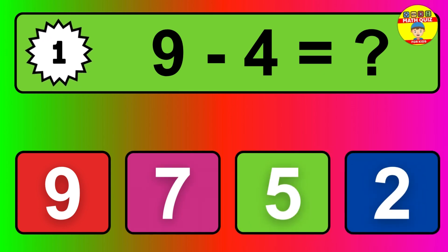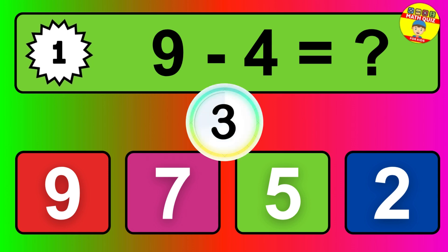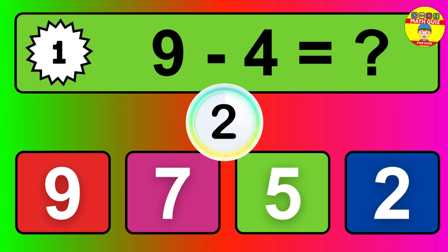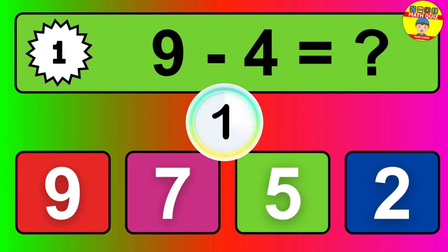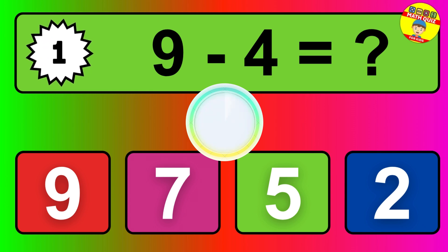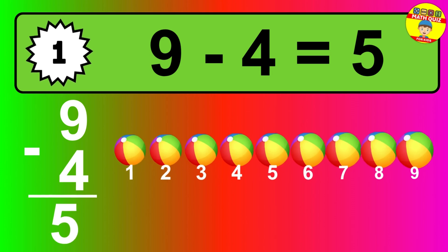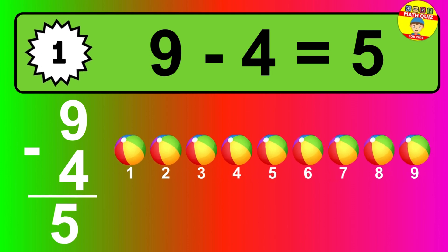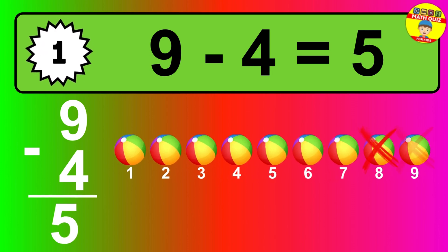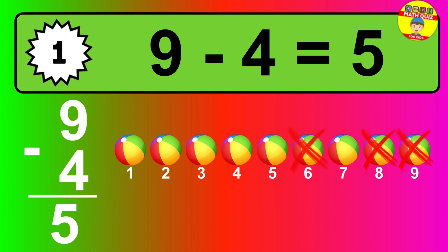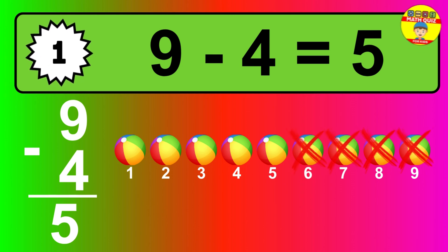Question 1. 9 minus 4 equals what? So the answer is 9 minus 4 is 5. Let's count it: 1, 2, 3, 4, 5.